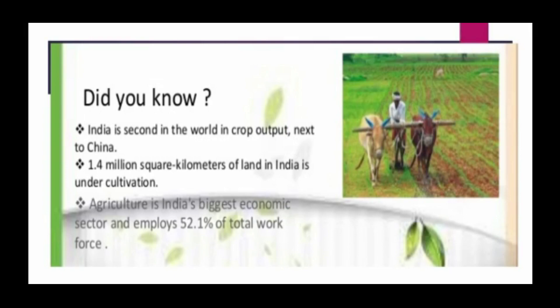Here are some important facts about agriculture in India. India is second in the world in crop output, next to China. 1.4 billion square kilometers of land in India is under cultivation. Agriculture is India's biggest economic sector and employs 52.1% of the total workforce.